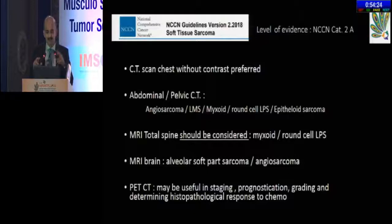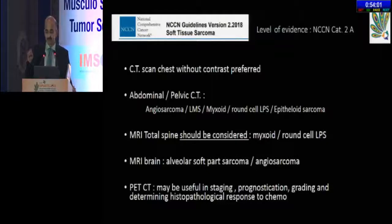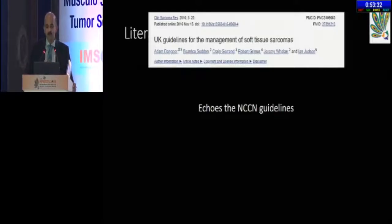The NCCN guidelines, which are category 2A level of evidence, say that CT scan chest without contrast is preferred for the chest, but as Professor Wang pointed out, for mediastinal disease, contrast is likely preferred. If screening the abdomen and pelvis, contrast is preferred. In specific cases of angiosarcomas, leiomyosarcomas, and myxoid round cell liposarcomas, contrast-enhanced abdominal and pelvic CT scans should be added. MRI total spine should be considered for myxoid and round cell liposarcomas. MRI brain is recommended for alveolar soft part sarcoma and angiosarcomas. PET-CT remains debated but is specifically useful in determining sarcomatous changes in multiple neurofibromatosis and in recurrent disease when aggressive surgery is planned.